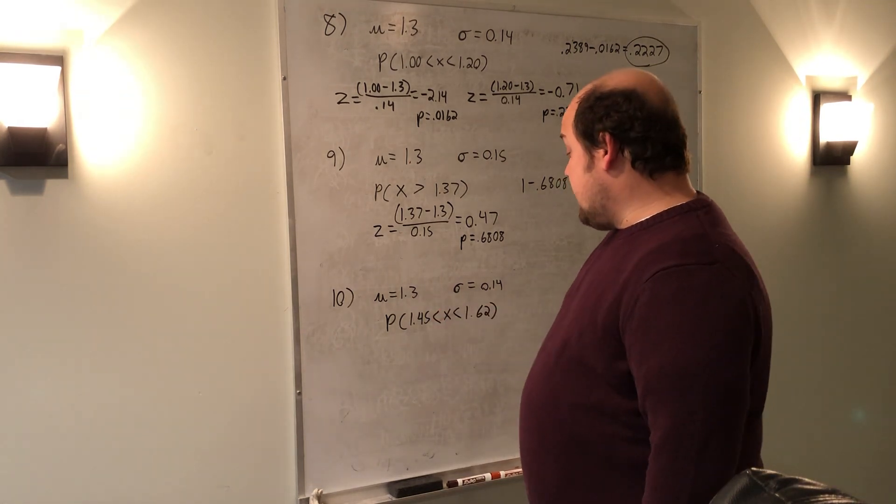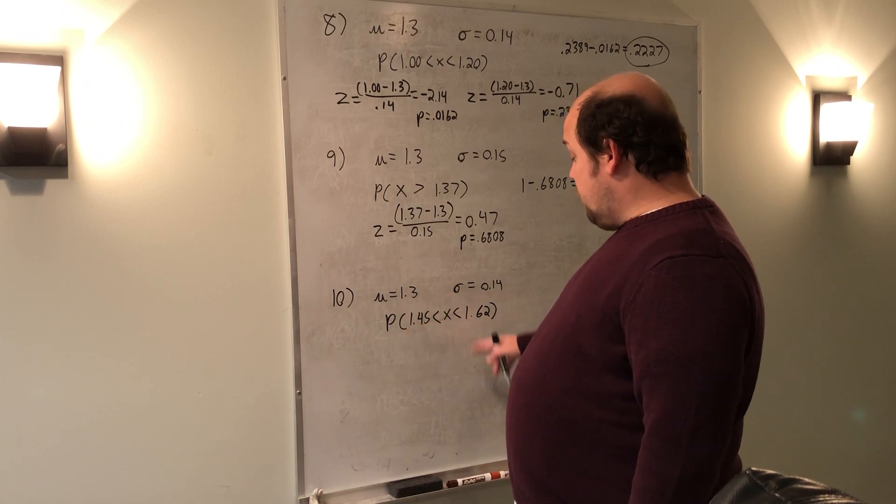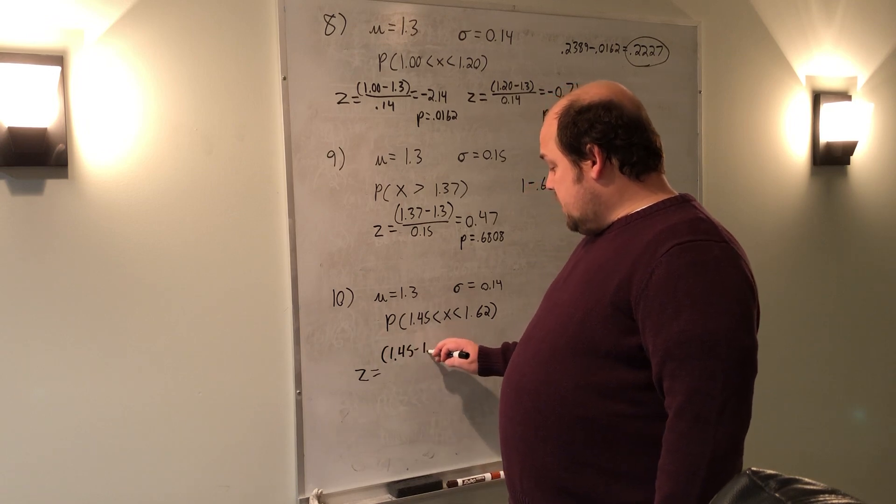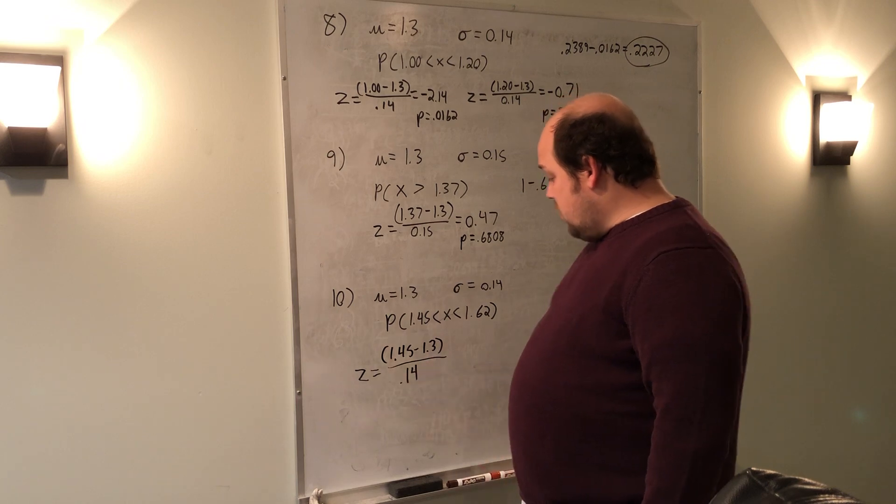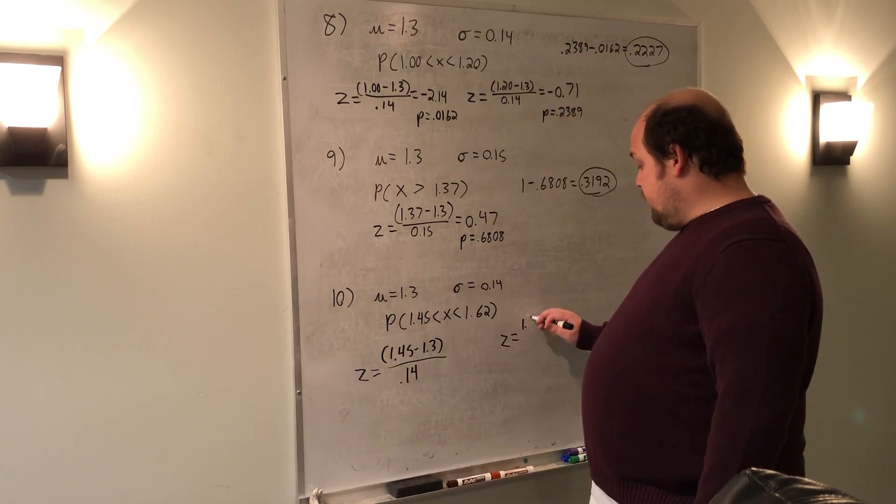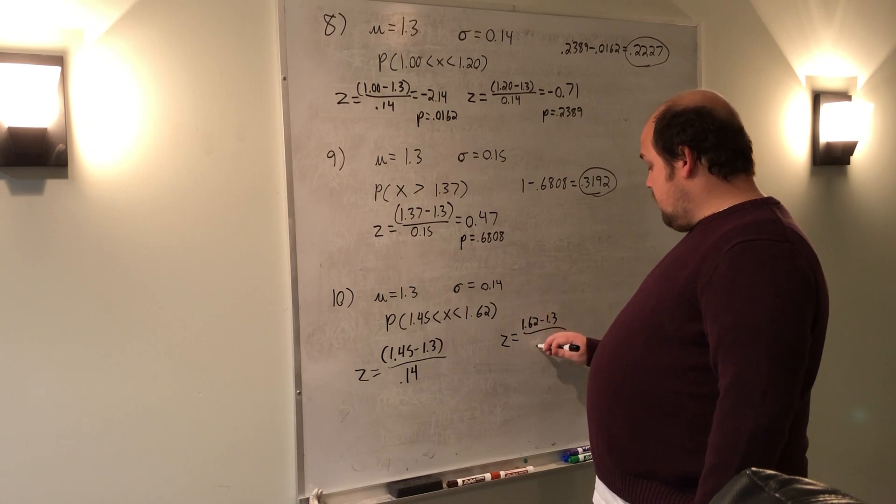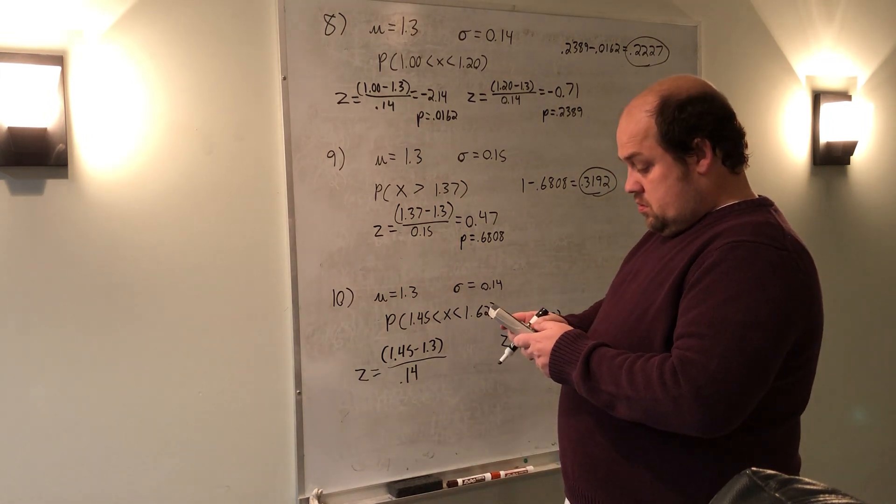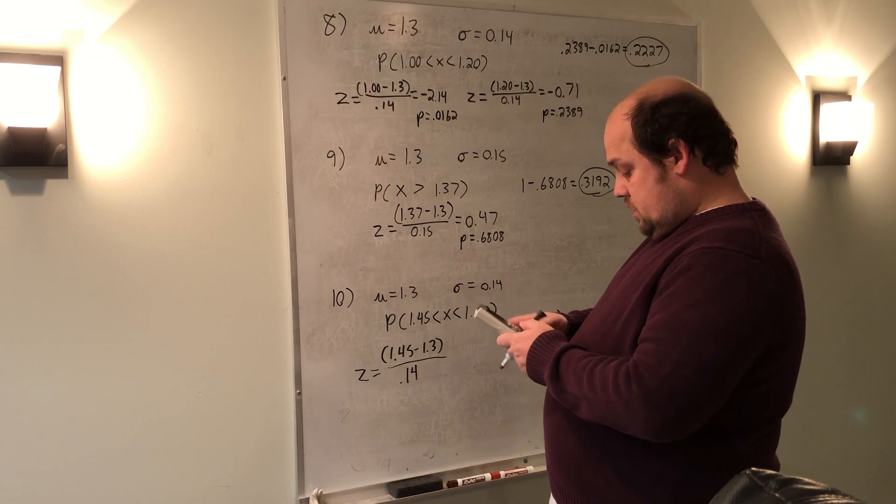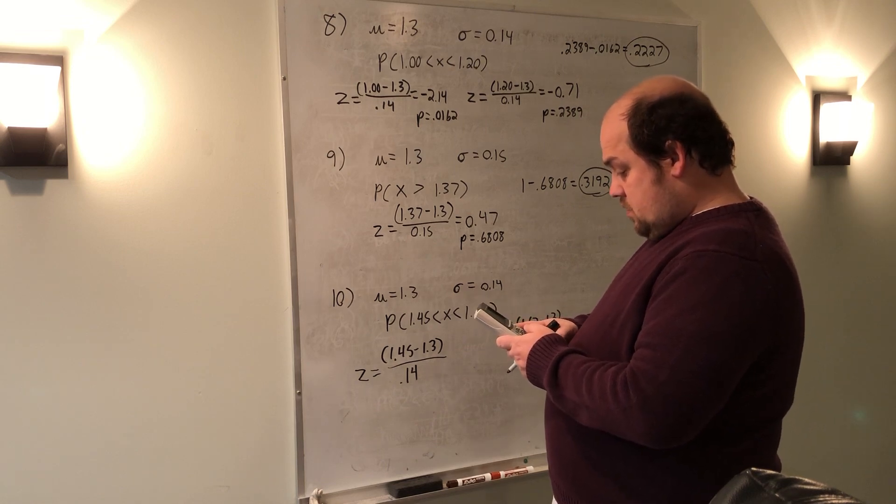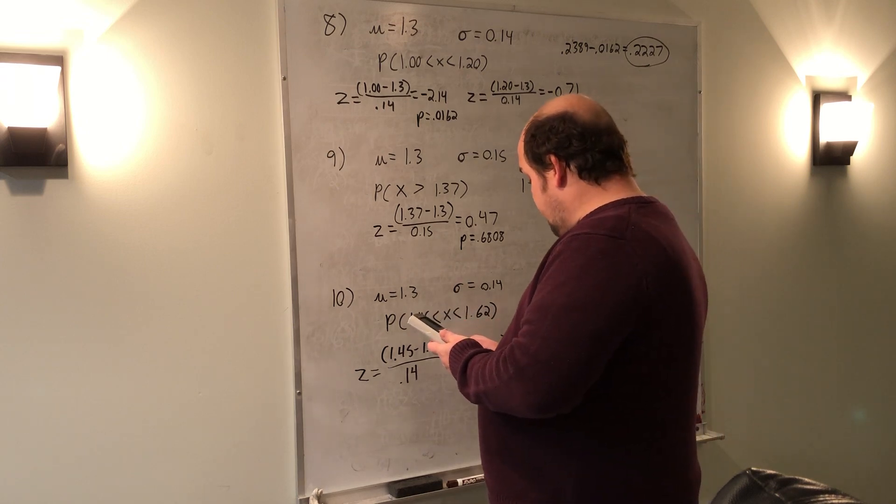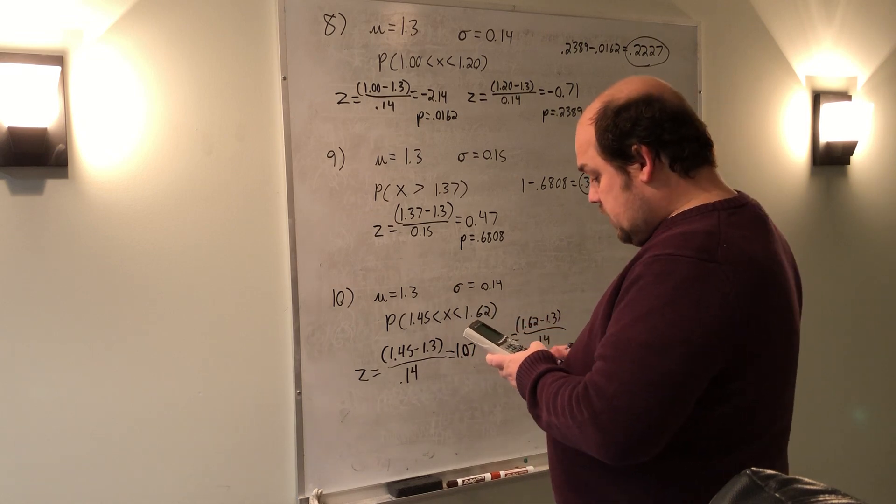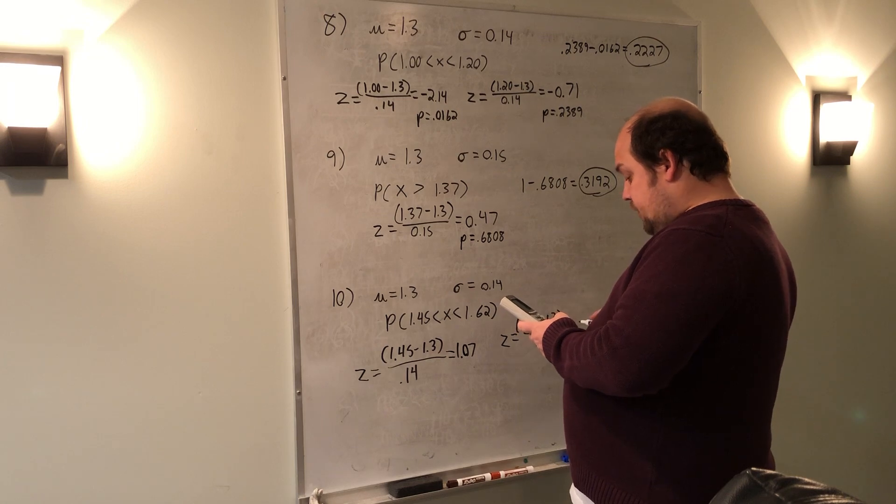For the final problem here, number 10, I'm going to need to do two different z-scores for 1.45 and 1.62. So I'm going to set up 1.45 minus 1.3 over the given standard deviation, 0.14. Then I'm going to set up 1.62 minus 1.3 over 0.14. Put them each into my calculator. When I do 1.45, it gives me a z-score of 1.07. When I instead do 1.62, it gives me a z-score of 2.29.